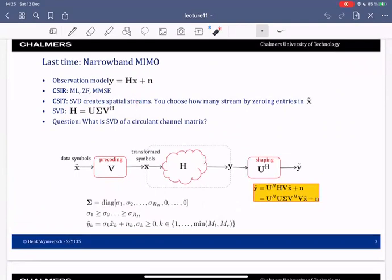When the transmitter has channel knowledge we can apply SVD to create spatial streams. SVD is given by U Sigma V Hermitian where U and V are unitary matrices. Sigma is a diagonal matrix with positive real values ranked from high to low. The number of spatial streams is decided by us but is limited by the rank of sigma or the rank of the underlying channel.